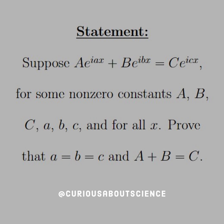Suppose that Ae^(iax) + Be^(ibx) = Ce^(icx) for some non-zero constants A, B, and C and little a, b, and c for all x. Show or prove that a equals b equals c and capital A plus capital B equals C.